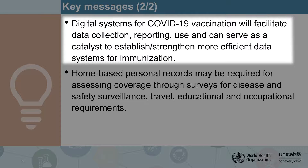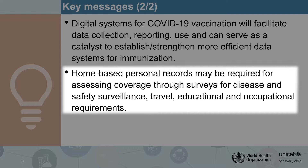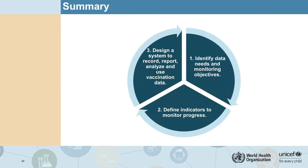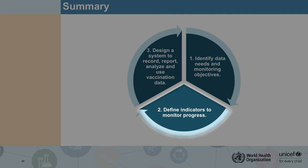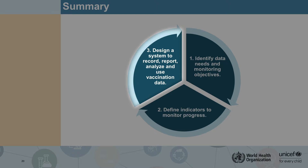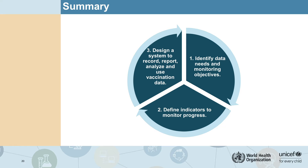Home-based personal records will be required for assessing coverage and also for certifying vaccination for individuals. In summary: start with the identification of data needs and your monitoring objectives, then identify the indicators needed to monitor progress across all the geographic and demographic disaggregations discussed. Design a system to record, report, analyze and use vaccination data, and evaluate whether the system meets your needs — tweaking and refining it over time. Thank you for attending this module and good luck with the monitoring of COVID-19 vaccines.